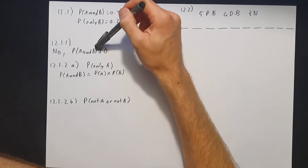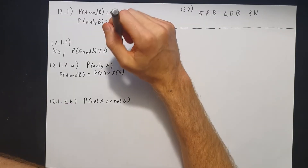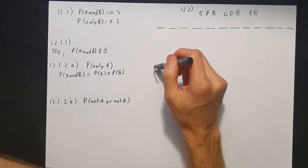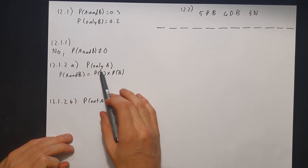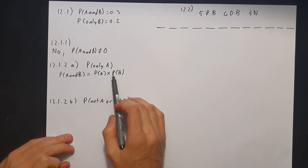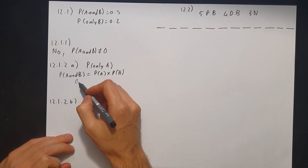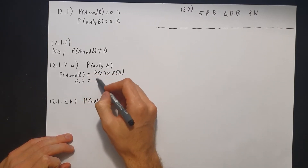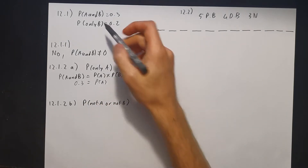Now question 12.1.2 asks for the probability of only A. Be careful, because you get the probability of A and then you get the probability of only A. We know from the formula that the probability of A and B equals the probability of A multiplied by the probability of B. So we have the probability of A and B, which is 0.3, equals the probability of A multiplied by the probability of B.